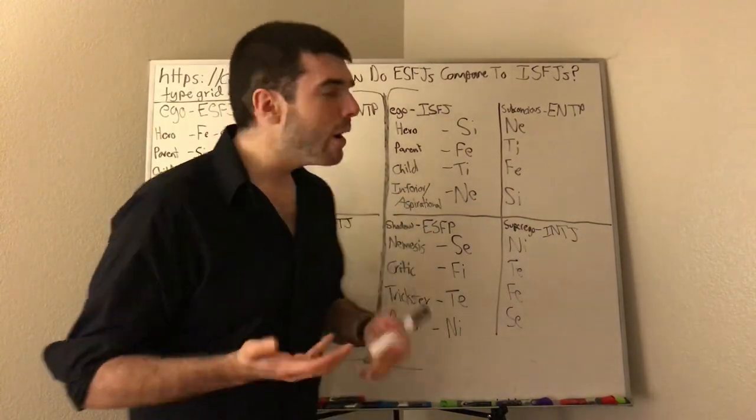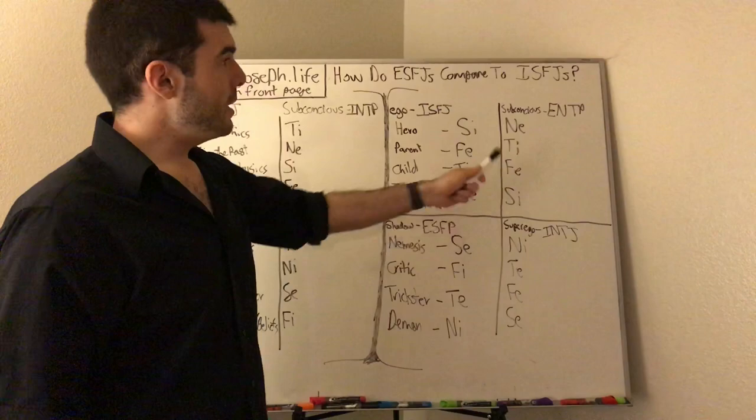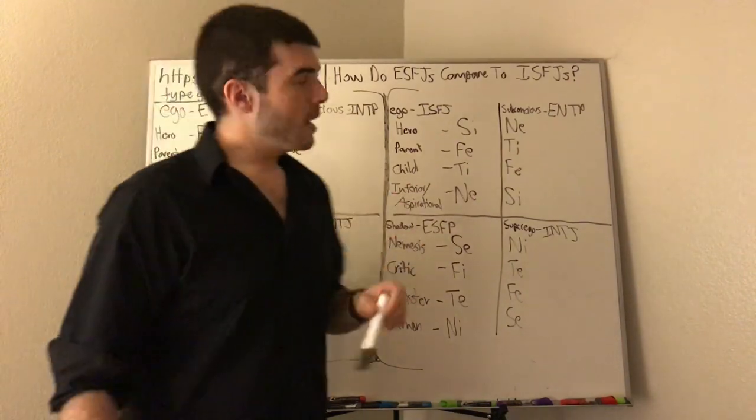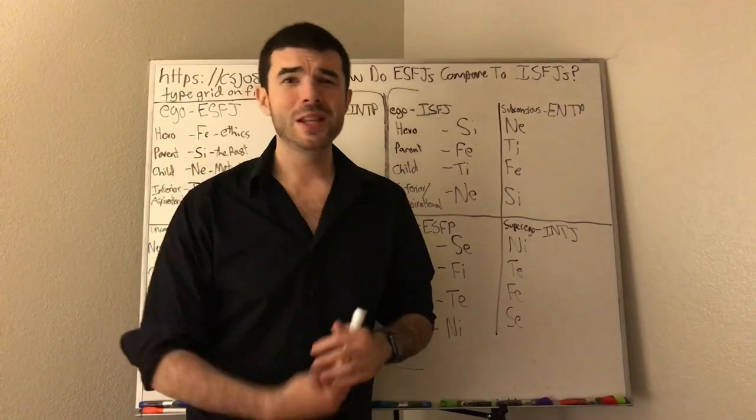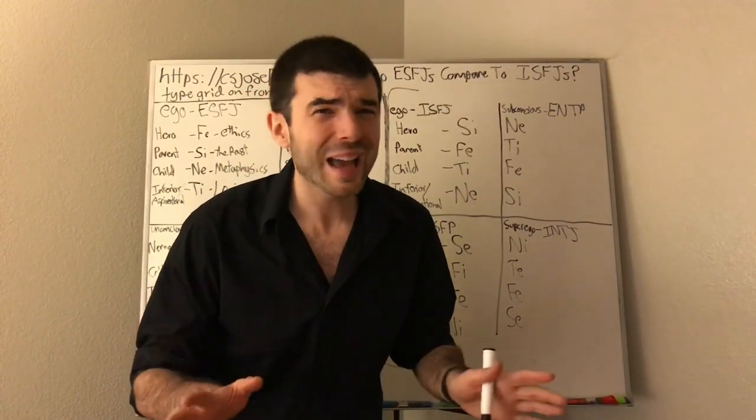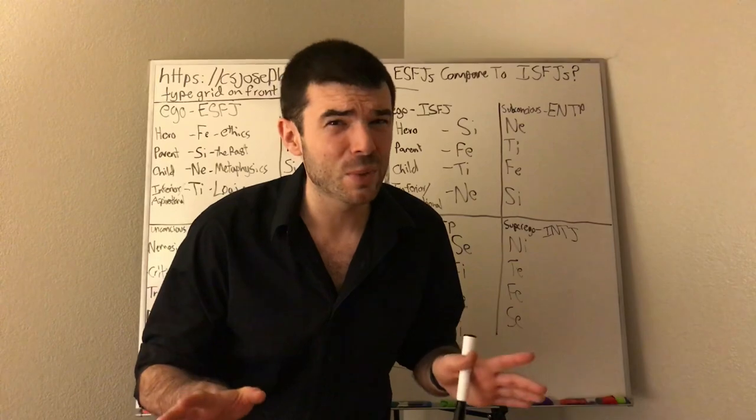This person could have bad intentions. Whereas the ESFJ not so much is like, Oh, I'm a little kid. I think everybody in the world has good intentions towards me. Whereas the ISFJ is like, everyone in the world's out to screw me, potentially, I got to watch out and protect myself against them screwing me or my family or people I know or people I care about. Completely different perspective, very different perspective.